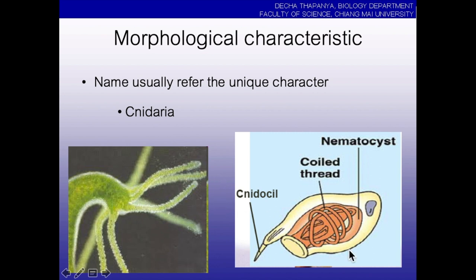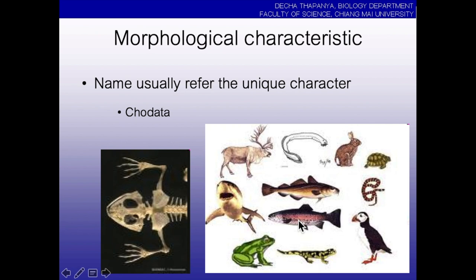Each species contains unique characters. This is phylum Cnidaria — every species in Cnidaria has cnidocytes, which are toxic stinging cells in the tentacle. And phylum Chordata means the animal that contains a notochord — the backbone. Every chordate contains a backbone.